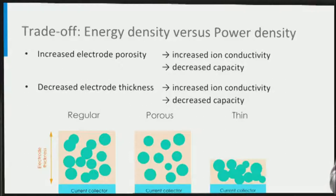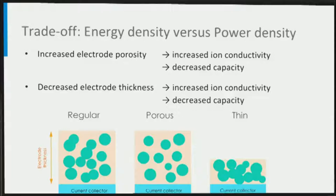A way to improve the lithium ion transport through the electrolyte that fills the pores of the electrode is to make the electrodes more porous. However, that decreases the amount of electrode material, which lowers the specific capacity of the electrode. This effectively lowers the energy density of the battery, as the same weight of current collector, separator, and packaging is still required. Another strategy is to make electrodes thinner, but that also results in less electrode material and hence a lower energy density.